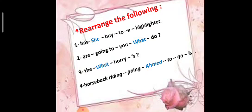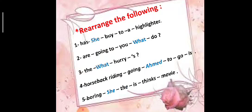Number four: horseback riding / going / Ahmed / to go. We start with 'Ahmed.' The answer is: Ahmed is going to go horseback riding. Number five: boring / she / the / is / thinks / movie. We start with 'she.' The right answer is: she thinks the movie is boring.